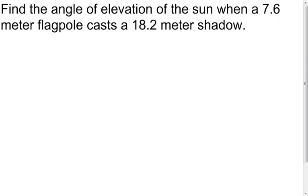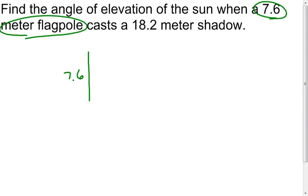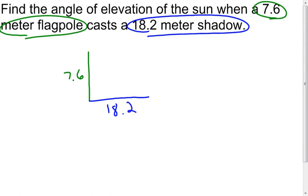Now my next problem — no picture this time, so we're going to have to draw our own. It tells us to find the angle of elevation of the sun with a 7.6-meter flagpole casting an 18.2-meter shadow. I draw my picture: a 7.6-meter flagpole, and a shadow of 18.2 meters. I'll assume the flagpole is perpendicular to the ground, and the angle of elevation I'll just call x.